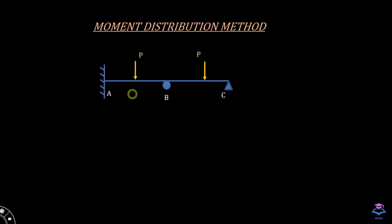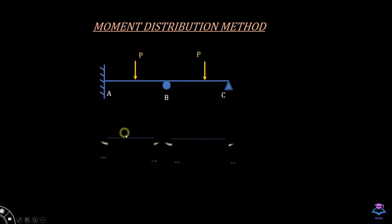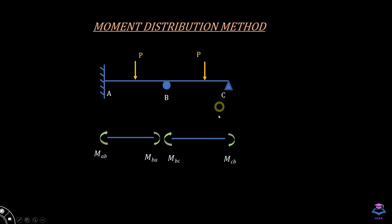Consider a 2-span continuous beam. If we apply all the steps of the Moment Distribution Method to this beam, we obtain end moments MAB, MBA, MBC, and MCB. The first subscript indicates the point at which the moment is produced, and the second subscript indicates the far end. The sign convention for moment is taken as clockwise positive in the Moment Distribution Method.